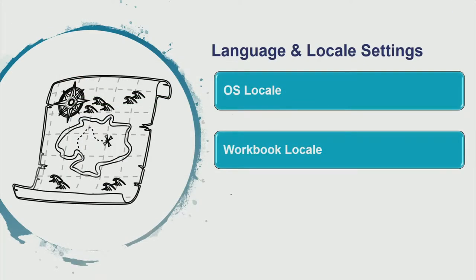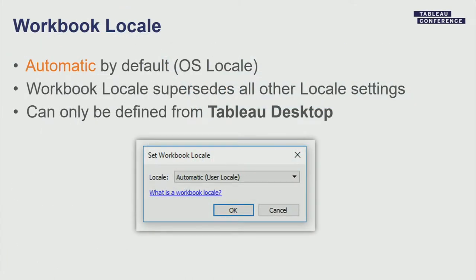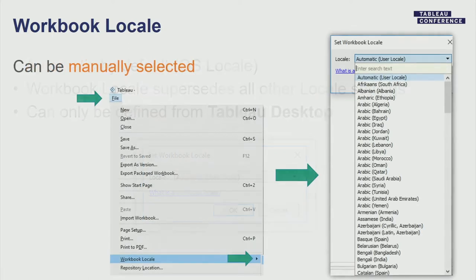Our second setting is the workbook locale. The workbook locale can only be defined from Tableau Desktop, and it defines the locale — the data format — in which you'll see your data on a workbook-by-workbook basis. By default it is set to automatic, which means we just read the operating system locale settings on your device. Very importantly, the workbook locale is the locale setting that supersedes or overwrites all other locale settings that exist. As I like to say, the workbook locale is like the one ring that rules them all — use it carefully. To set it from Tableau Desktop, click File, then Workbook Locale, and pick the locale you want.